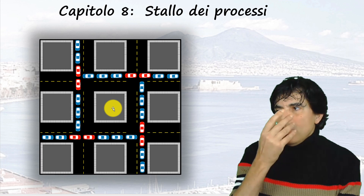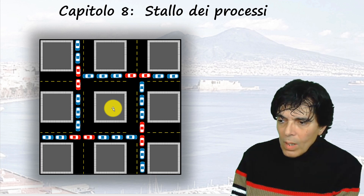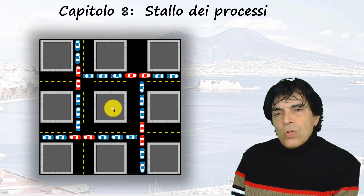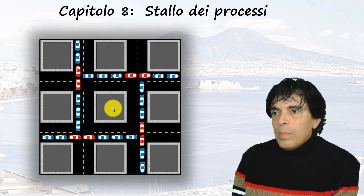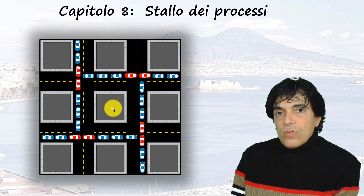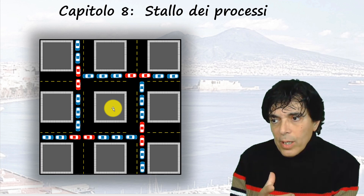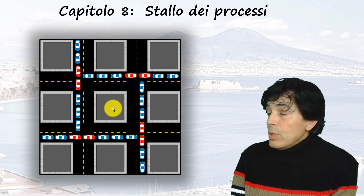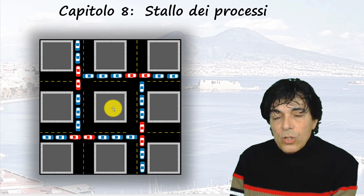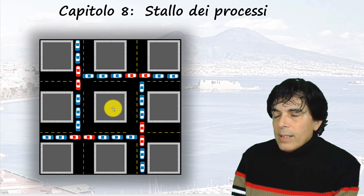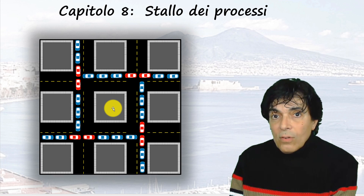Guardando queste immagini si possono fare tante riflessioni. Se le strade fossero state più larghe o ci fosse meno traffico, il rapporto tra traffico e risorsa disponibile sarebbe migliore. Con la corsia unica e senza semafori o regolamentazioni opportune, la congestione è pressoché assicurata, soprattutto con alta densità di traffico.